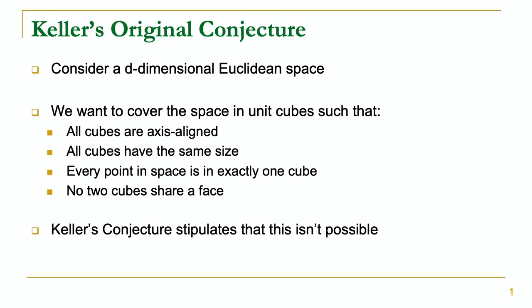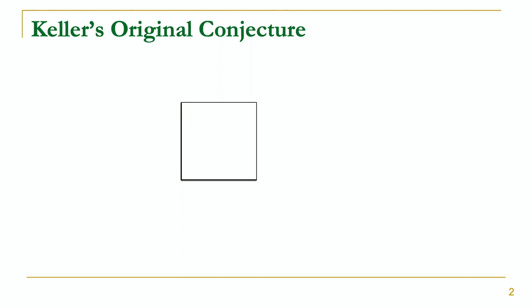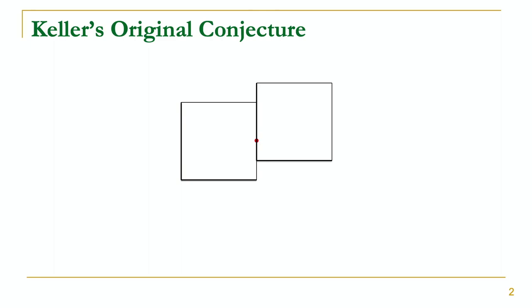To gain an intuition as to why this might be true, let's take a look at the two-dimensional case. If we want to build a face-share-free tiling, we have to start by putting a cube somewhere — in two dimensions, that's just a square. As a convention, the left and bottom edges of the square are included as part of the square, whereas the top and right edges are not. This is just so that if two squares are right next to each other and we're considering a boundary point, there's no ambiguity as to which square that point belongs to. We start with this square, and to cover every point in the space, we need to cover this red point. We might try to put a square here, but then we'll be exhibiting face-sharing, so we maybe move the square a bit. But then we find we're stuck and can't actually proceed further to produce a face-share-free tiling.